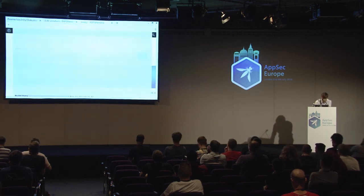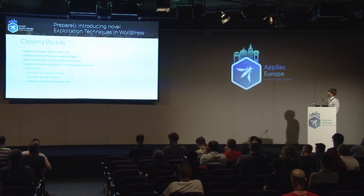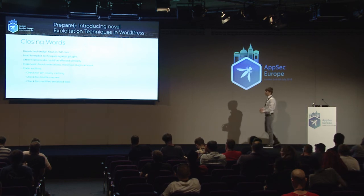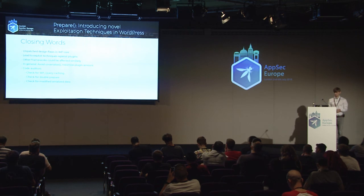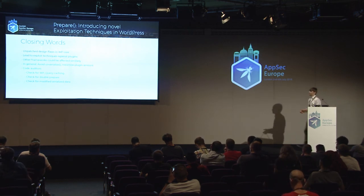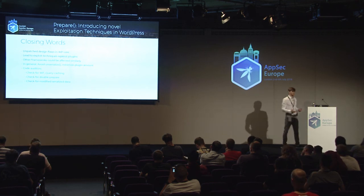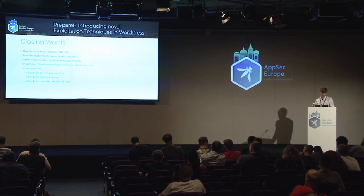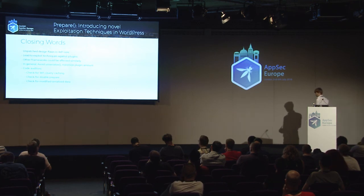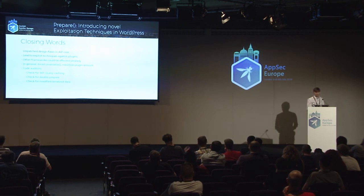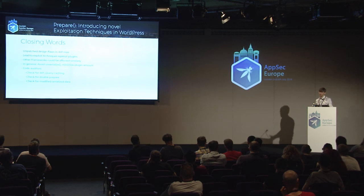Closing words. We have seen two exploitation techniques. The first one was the double prepare, and the second one was a PHP object injection which can generalize to apply to many plugins. For developers: try to avoid using unserialize — we have JSON encode and JSON decode, and most of the times this should be sufficient. If you see this WP_Query object being cached as a penetration tester or code auditor, you pretty much know you still have an injection, even in the latest WordPress version. It's a design flaw in the core which cannot be taken out because of legacy code and backwards compatibility.